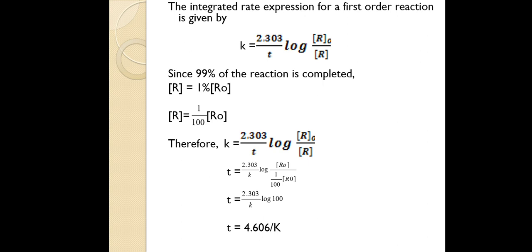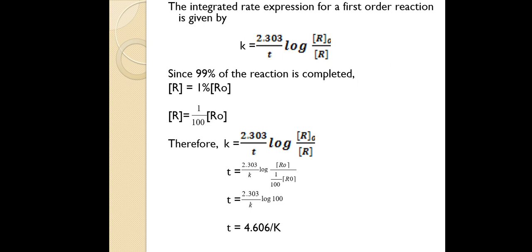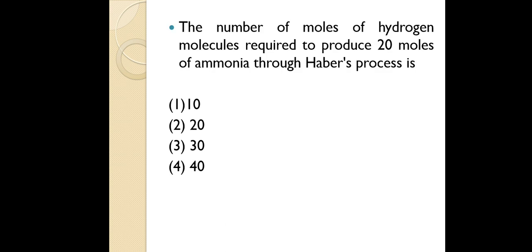Multiplying log(100) = 2 by 2.303 gives 4.606, so t = 4.606/k, which is option 3. You must remember the integrated rate equation for both first order and zero order reactions to solve this type of problem easily. The next question is from mole concept.